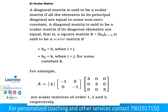Vij equals 0 when i is not equal to j, and Vij equals k when i equals j — meaning the diagonal elements are the same constant k, and all other elements are zero. For example: [-1, 0 / 0, -1] and [3, 0, 0 / 0, 3, 0 / 0, 0, 3] — diagonal elements are the same, so these are scalar matrices.